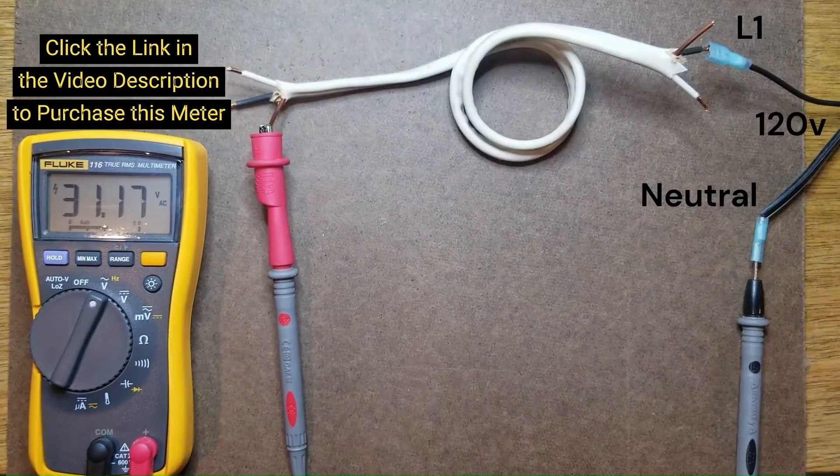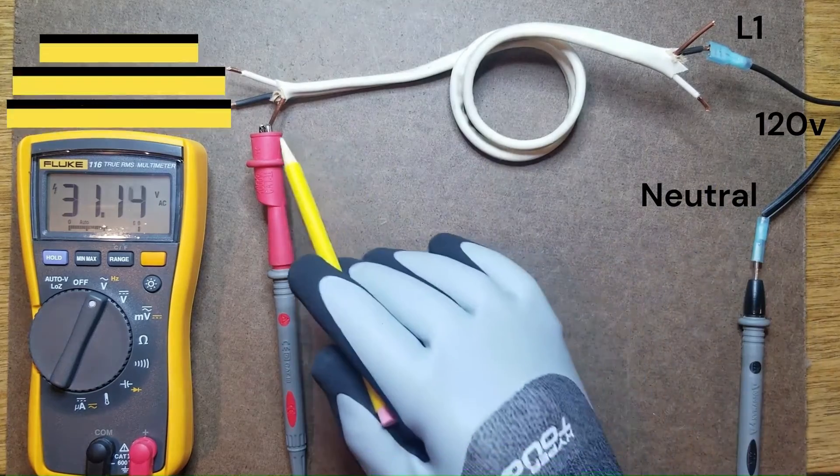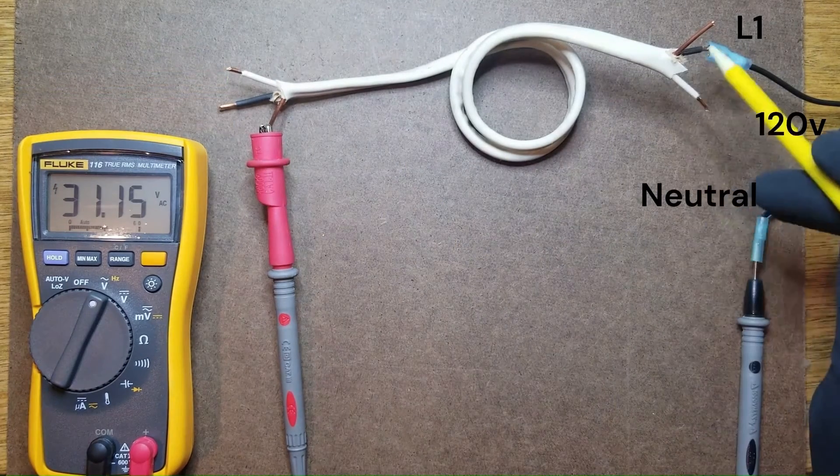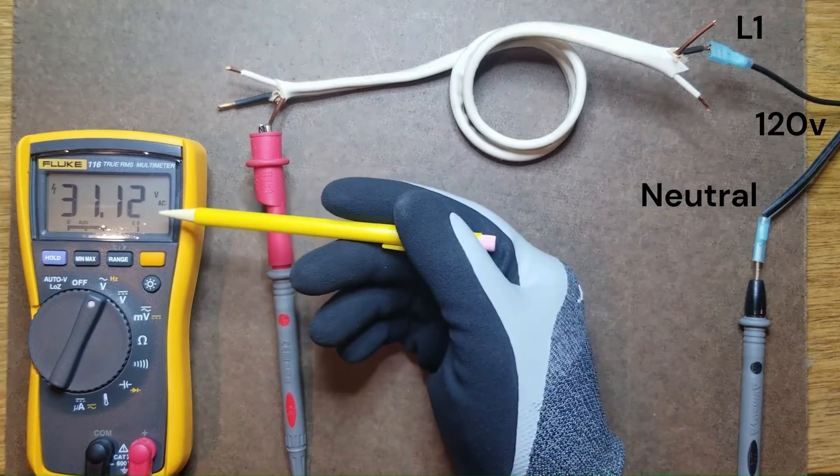It shouldn't have any voltage on at all. However, because of the proximity to the black wire and the capacitive coupling between the two, we're reading about 31 volts.